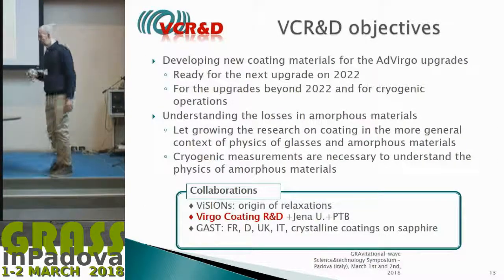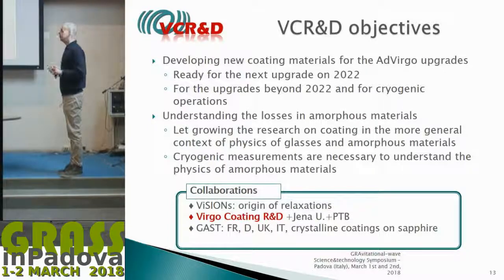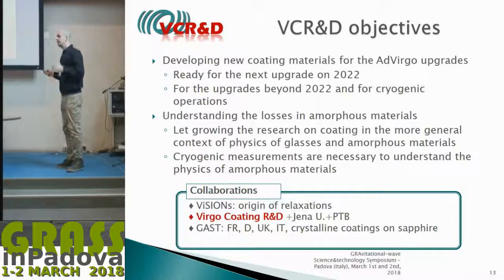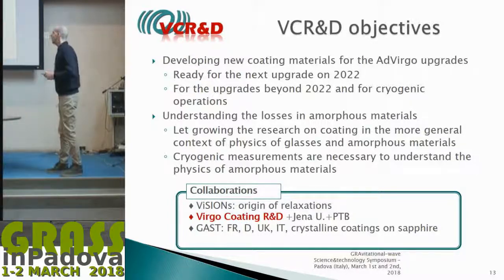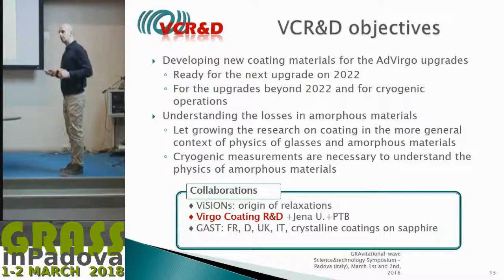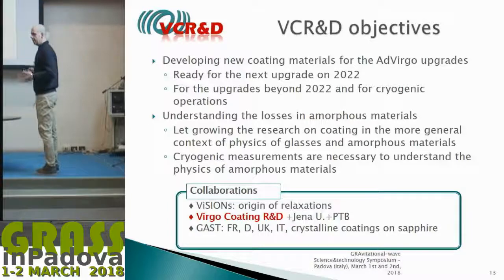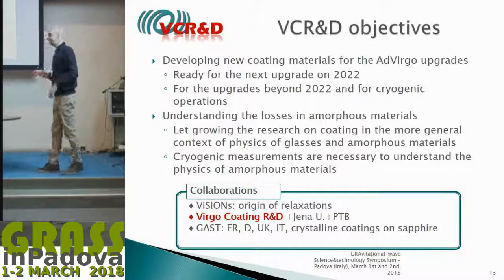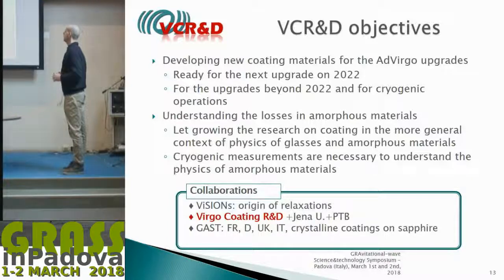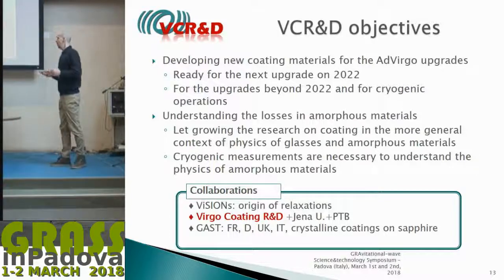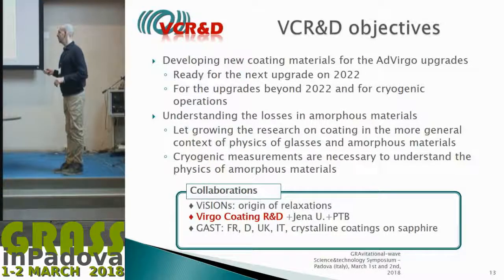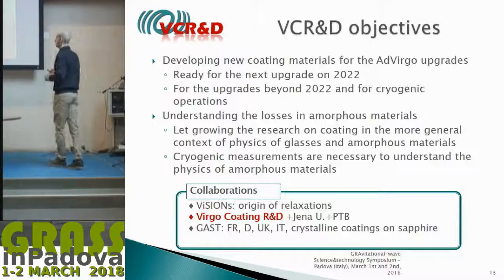Now, the objectives of the Virgo Coating R&D are twofold: developing new coating materials by around 2022 for upgrades of Advanced Virgo, and understanding losses in amorphous materials by growing the research in the general context of the physics of glasses—using cryogenic measurements to understand the origin and physical processes involved. Several collaborations are working side-by-side, including with LEN, PTB, and Vision, a project studying the origin of relaxation with LMA within the French physics framework.